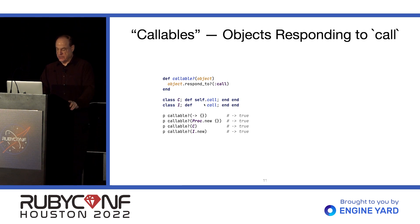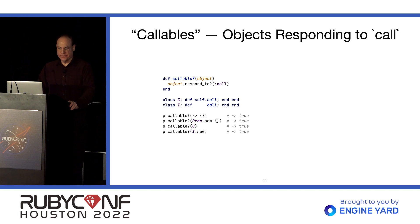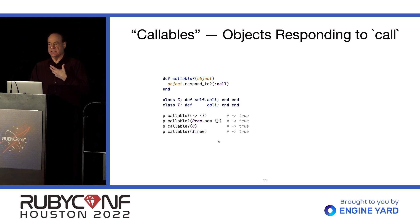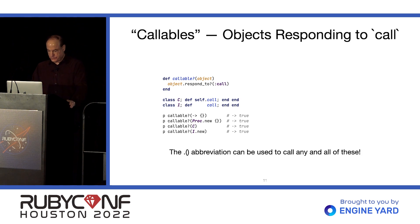We create a class with a call class method, a class with a call instance method. When we call callable on all four, they all return true. An empty Lambda, an empty non-Lambda proc, a class with a class method call, and an instance whose class has an instance method call — they're all true, so they're all interchangeable. Because of Ruby's duck typing, unlike pretty much every other language, the dot-parens notation can be used for any of these callables, not just procs or Lambdas.